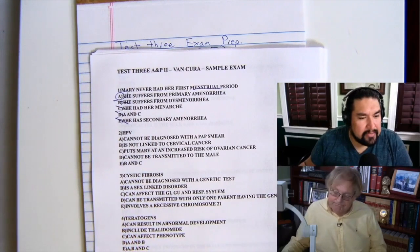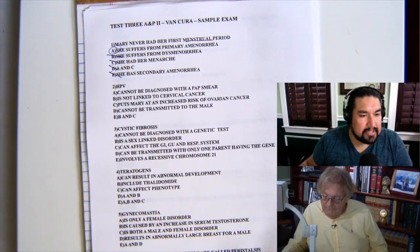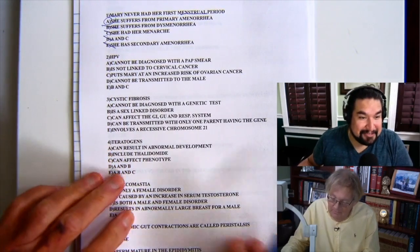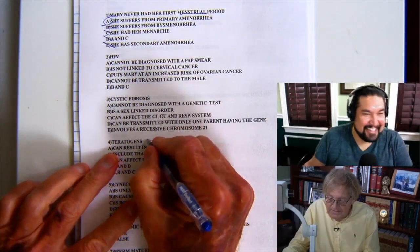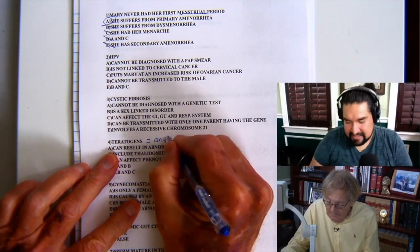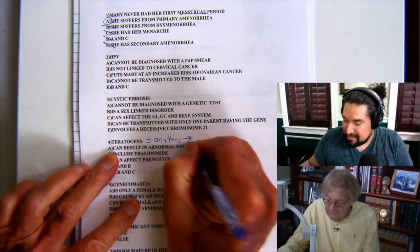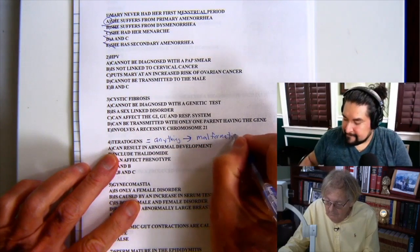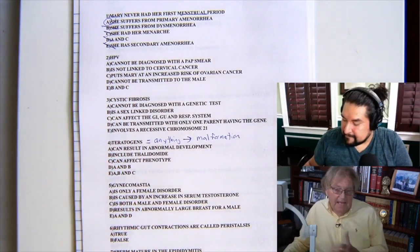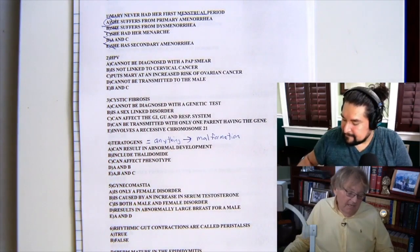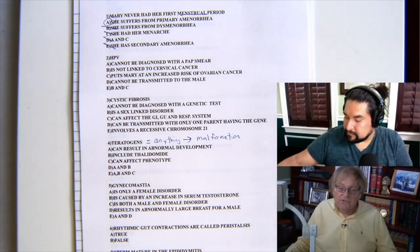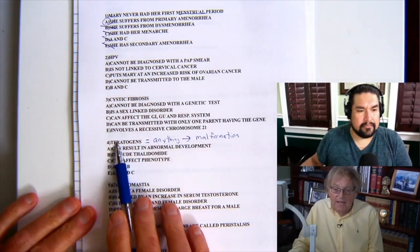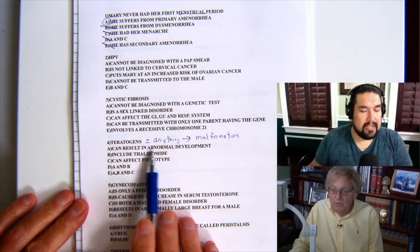Number 4 covers teratogens. A teratogen is defined as anything that causes or leads to a malformation — that can be radiation, an antibiotic, or a medication. If you took a teratogen while pregnant, could it result in abnormal development? Well, that sounds true, because it certainly could.